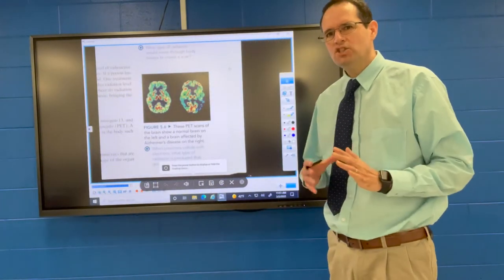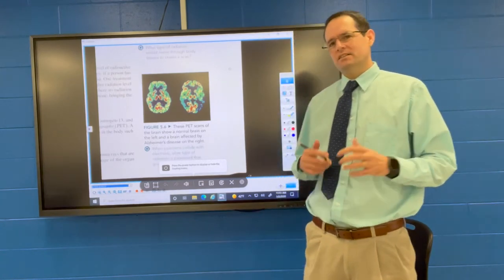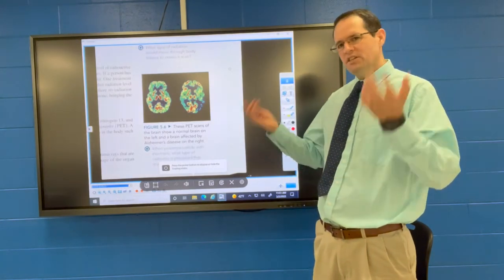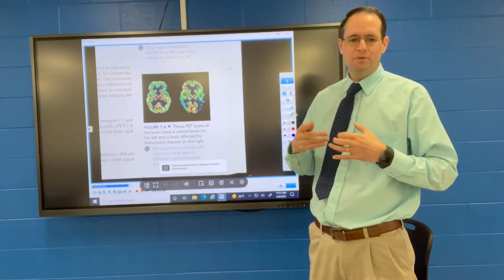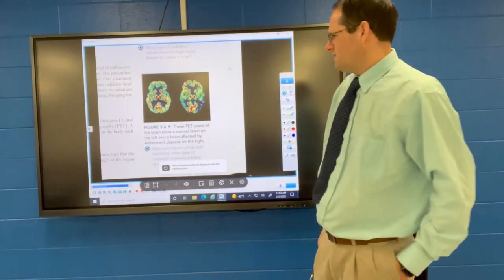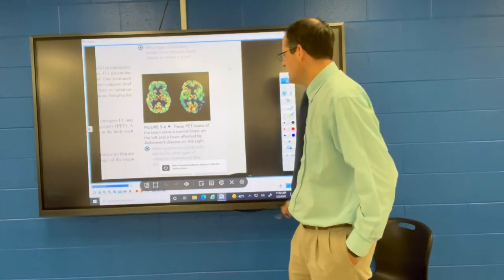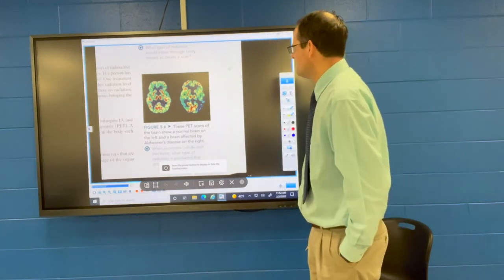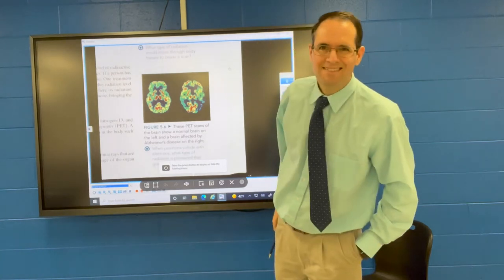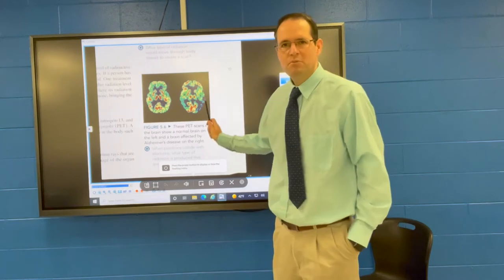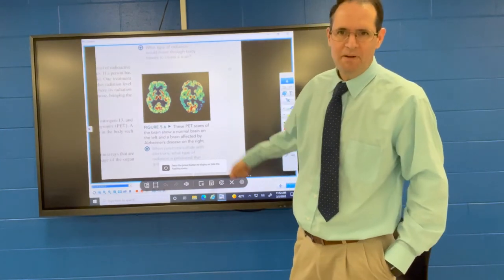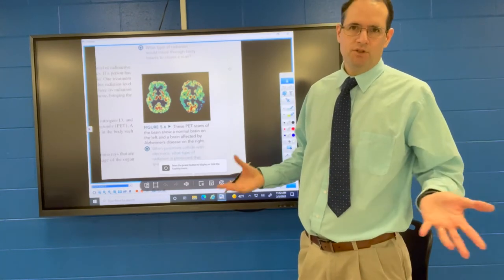This is a PET scan. PET stands for positron emission tomography. A positron is a form of antimatter emitted by a fluorine isotope that can be connected to sugar. If you ingest sugar radio-labeled with this radioactive isotope, it goes to different regions of your body and you can image your brain. We're looking at a normal brain on the left and a brain affected by Alzheimer's disease on the right. This is used for medical imaging of tumors as well.